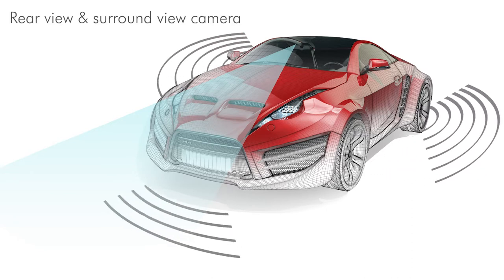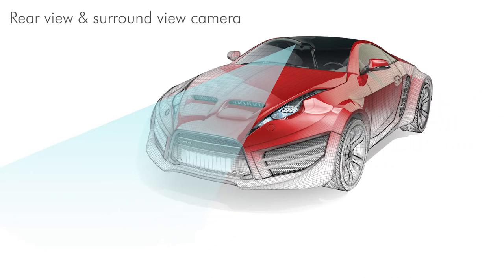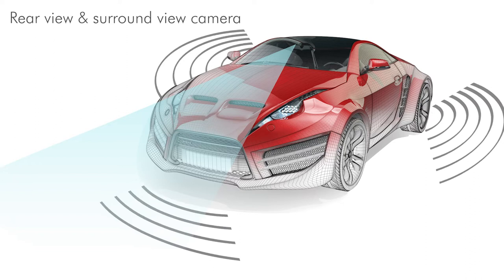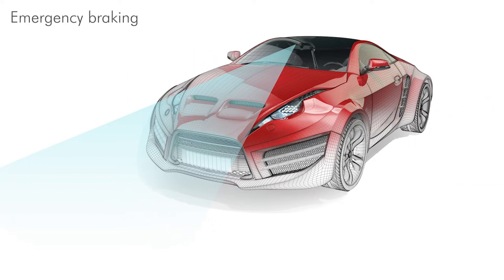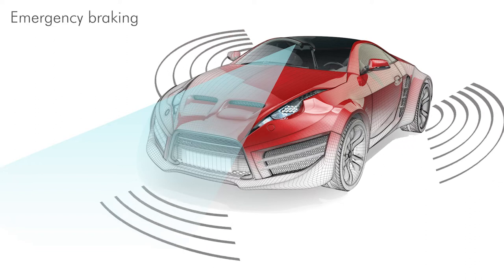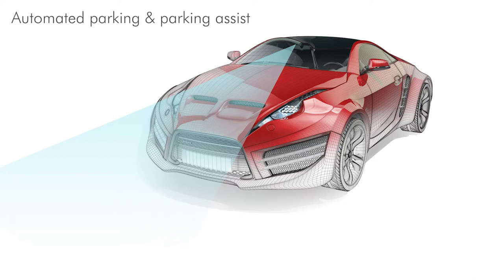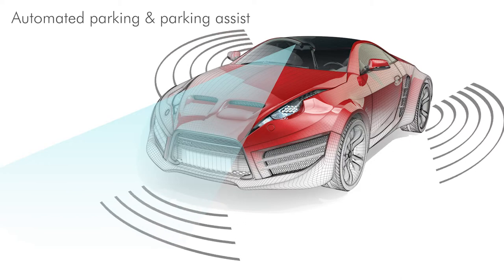Some examples of these systems are rear view and surround view cameras, lane departure, adaptive cruise control, emergency braking, automated parking, and parking assist.